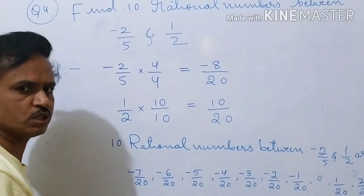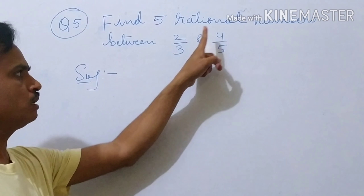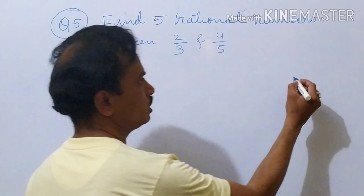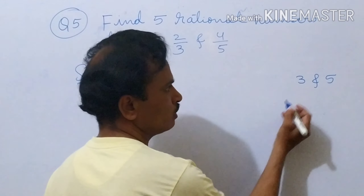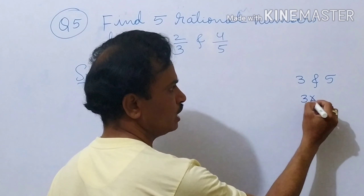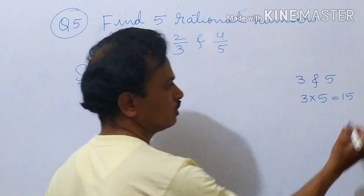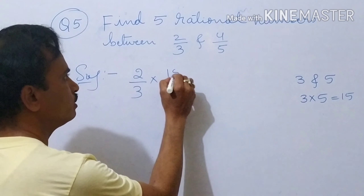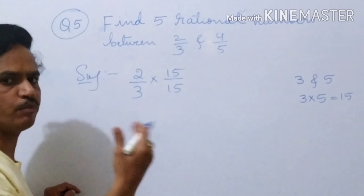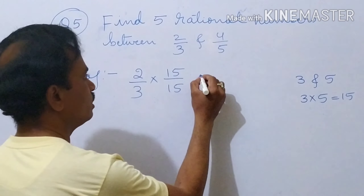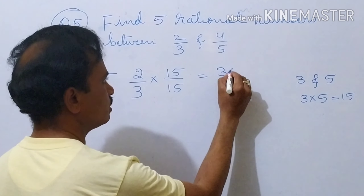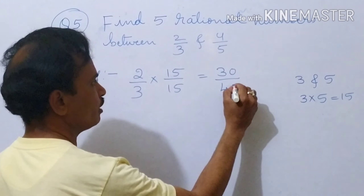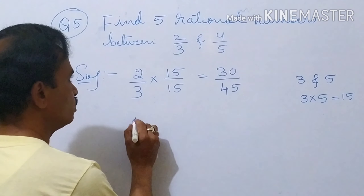Question number 5: find 5 rational numbers between 2 by 3 and 4 by 5. The denominators are 3 and 5. What is the LCM of 3 and 5? It is 15. So for 2 by 3, multiply by 15 by 15: 2 into 15 is 30, divided by 3 into 15 is 45.